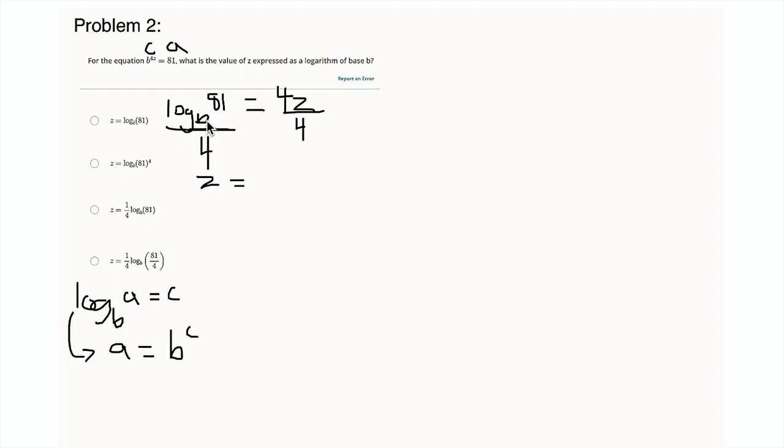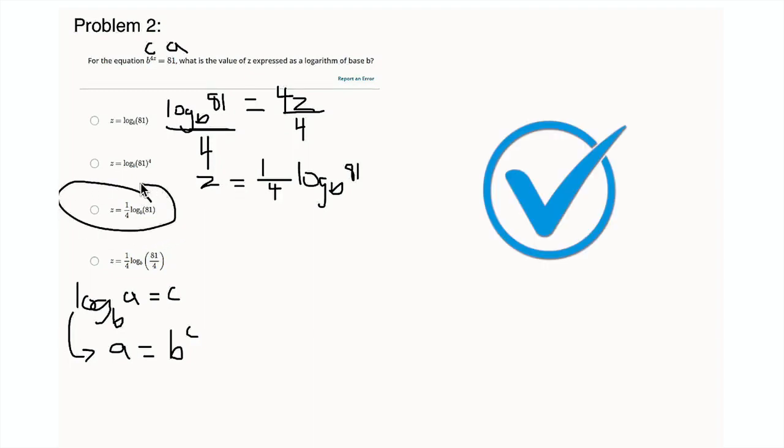So our answer should be z = log base b of 81 divided by 4. But looking at the answers, there's nothing that's like all over 4. It looks like they're doing it as a fraction. So dividing by 4 is the same as what? It's going to be the same as multiplying by 1/4. So I'm going to say 1/4 times the quantity, this doesn't change, log base b, log base b of 81. So that is this one here. Answer choice c. 1/4 log base b of 81. Great.